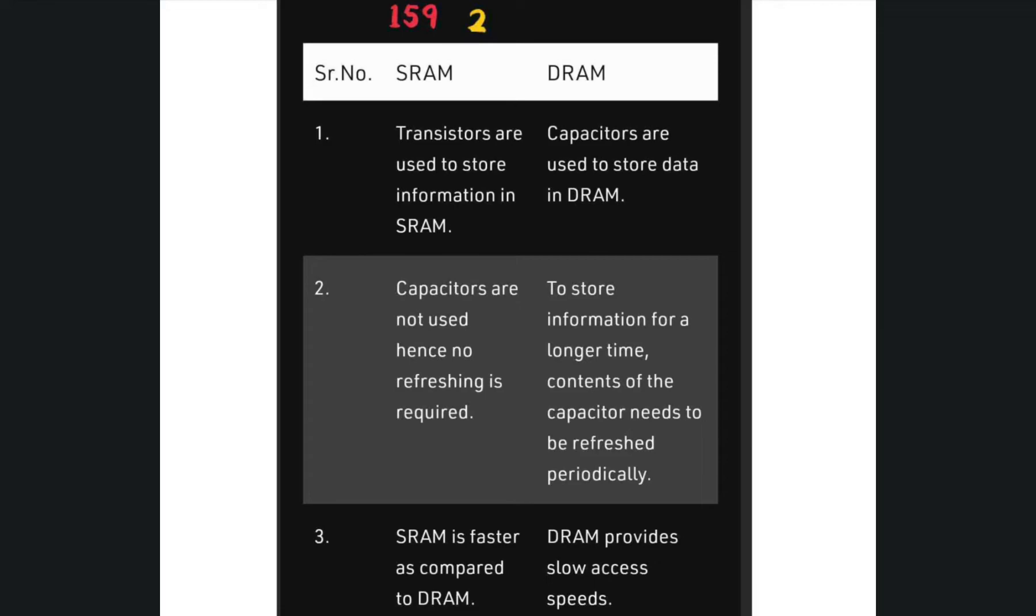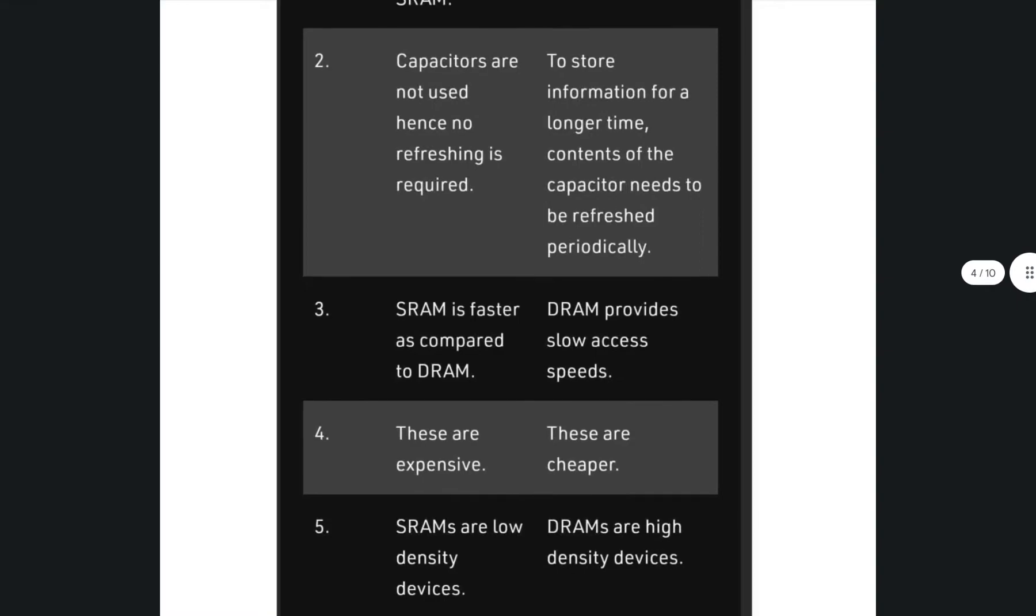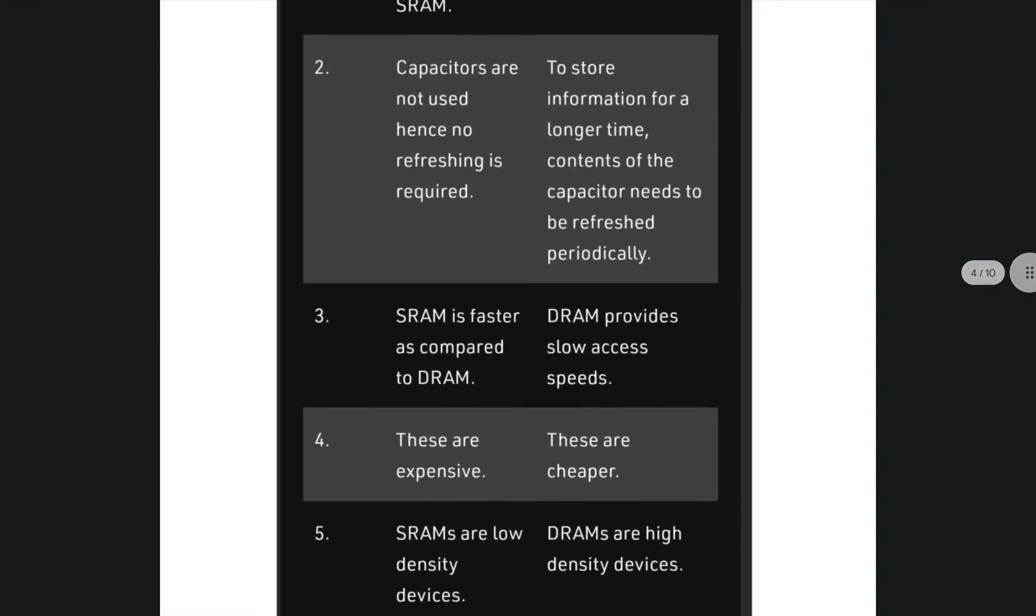Hence, there is no concept of refreshing in a static RAM whereas capacitor needs to be refreshed periodically in a dynamic RAM. So, SRAM is faster when compared to DRAM whereas DRAM is slower in speed.